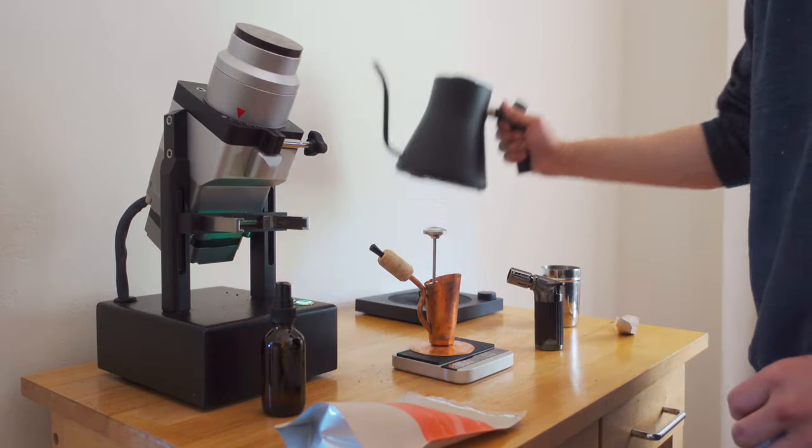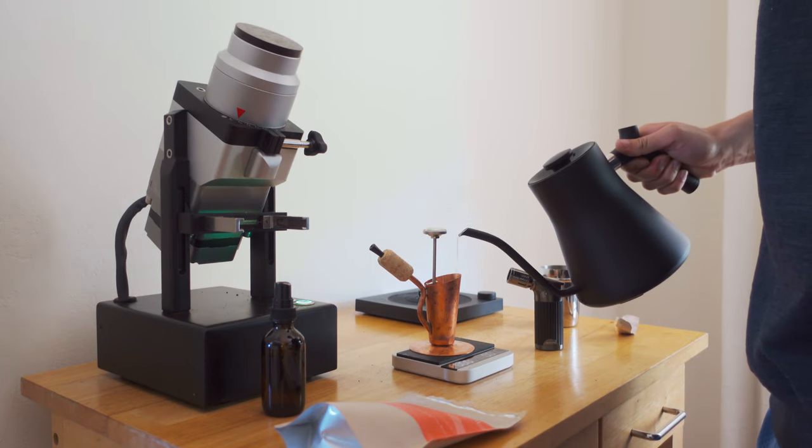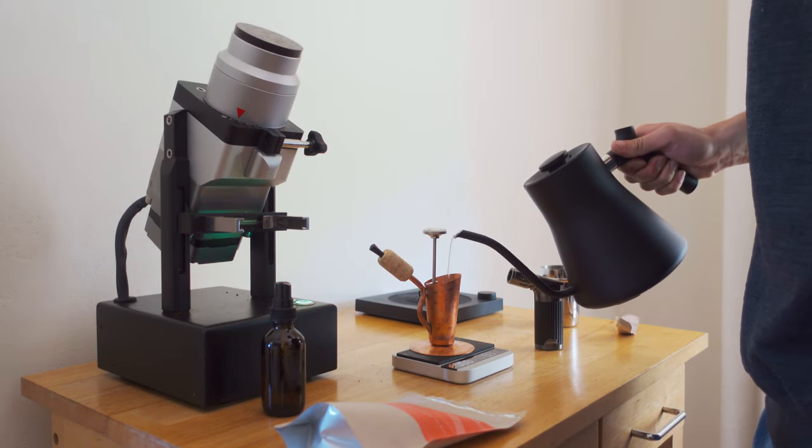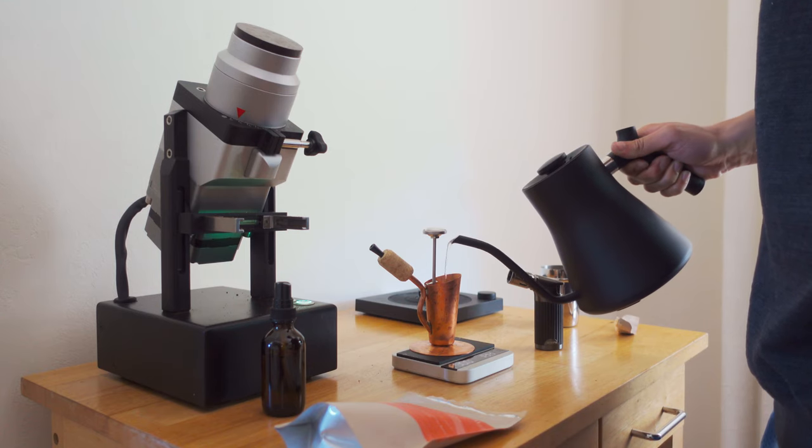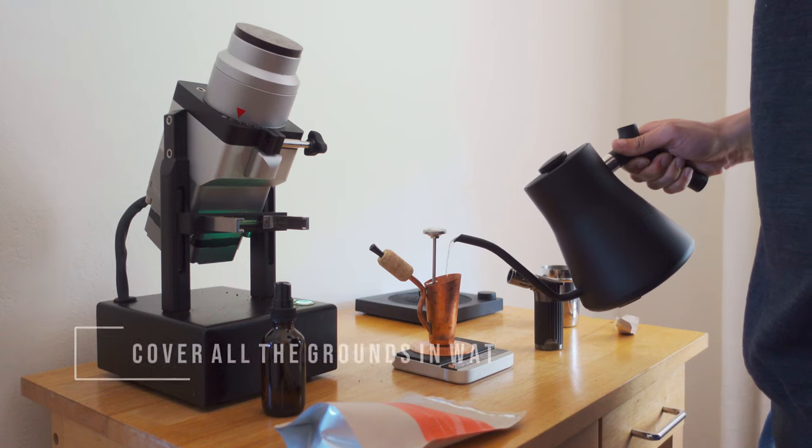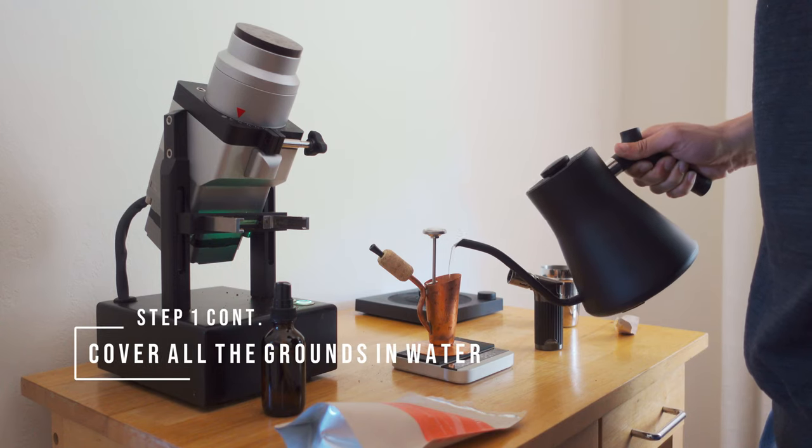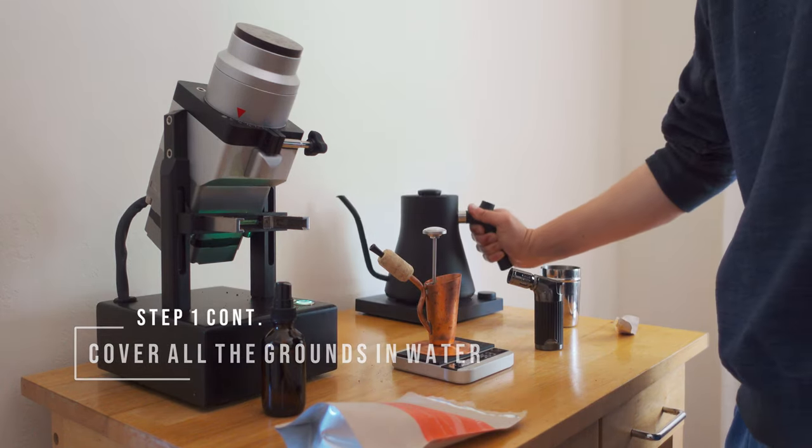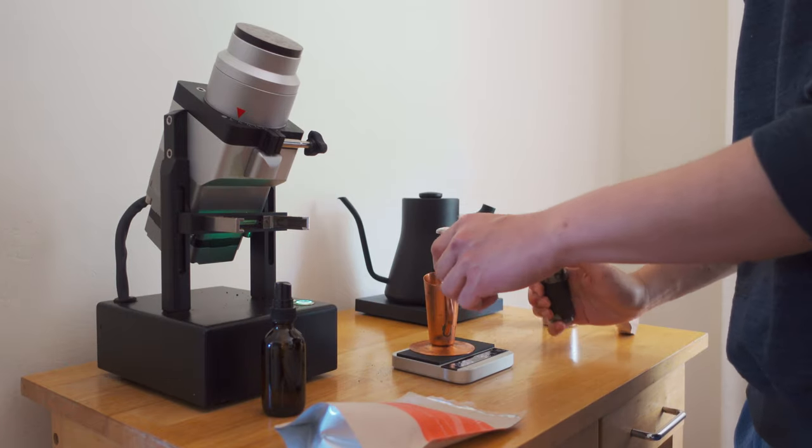I'll begin pouring slowly into the bripe. We'll be aiming for 35 grams here, so a 1 to 5 ratio. I like to pour in a circular pattern similar to a pour-over just to ensure all the grounds are saturated.